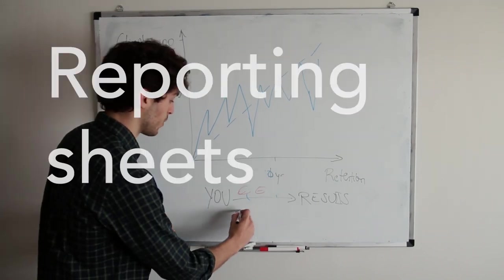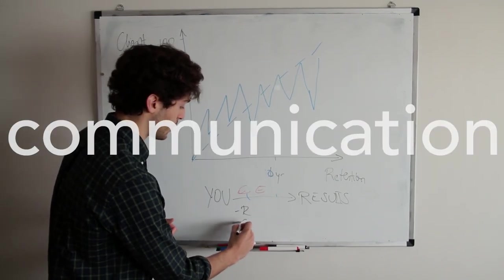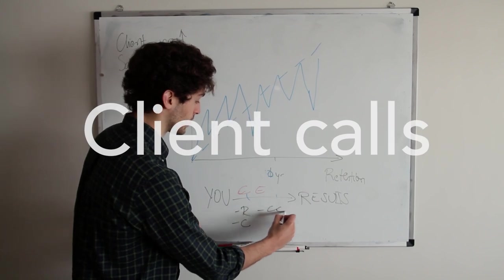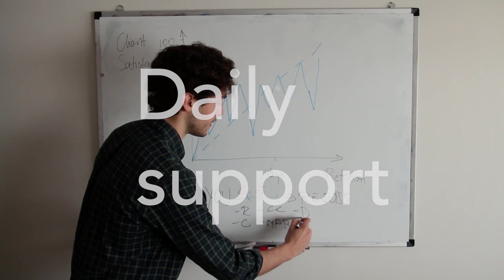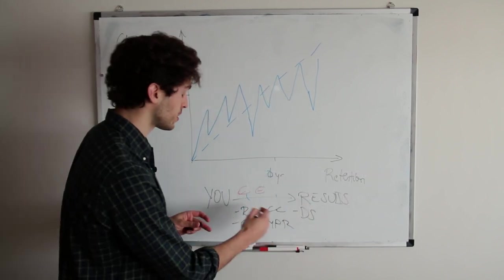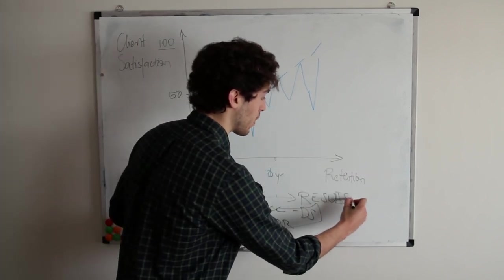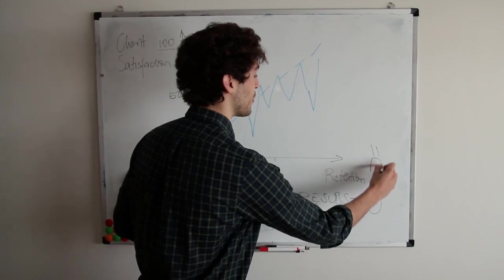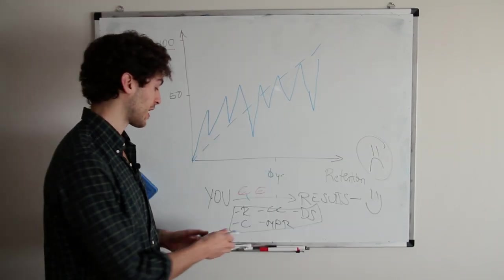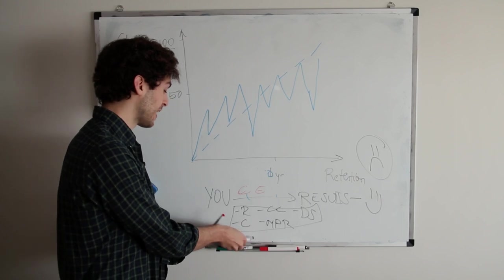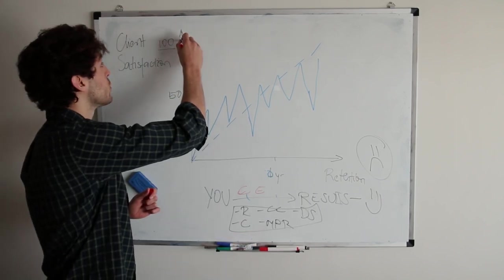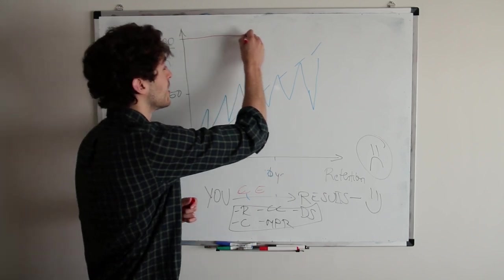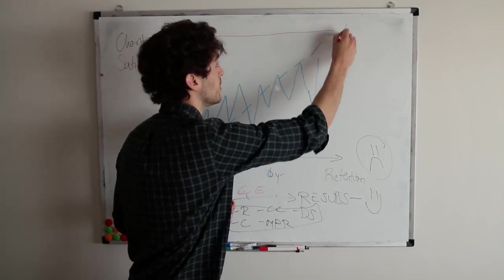And let's just call it client experience. So that has a direct correlation to results. Things like reporting sheets, communication, client calls, monthly performance reports, daily support, et cetera. All this stuff has a major role in whether they're really happy or whether they're not happy.